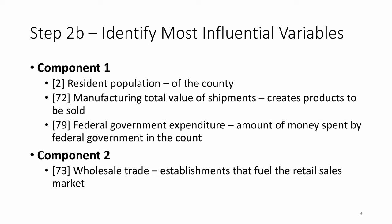Identifying the most influential variables, right, so these numbers that we just saw were actually coded variables so 2 represents a resident population, 72 represents manufacturing total value of shipments, 79 represents the federal government expenditure, those all comprise component 1. Component 2 is comprised of wholesale trade. So that's establishments that fuel the retail sales market.